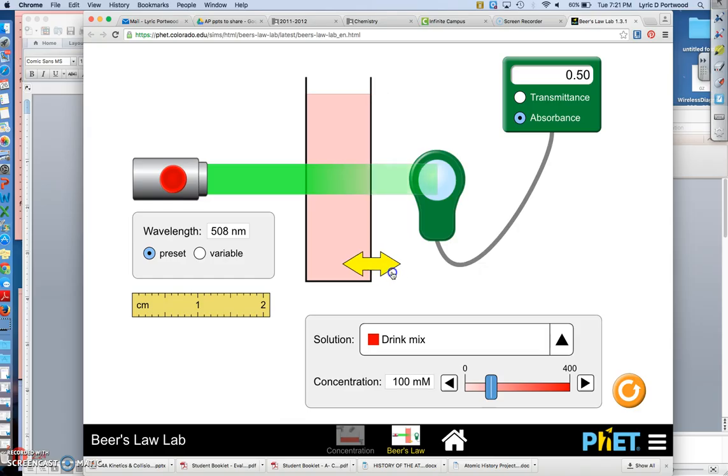And you see if you lower your path length, so that's about where we were previously, it decreases your absorbance because there are less molecules to absorb the light, and so more light makes it through to the sensor over here.